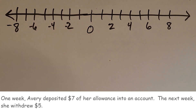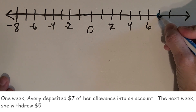Now we're going to move over to a whiteboard number line and do some real-life examples of positive and negative integers. Let's dig into the first problem. It says one week Avery put $7 of her allowance in an account. The next week she withdrew $5. So let's start with the number line — she put $7 in her account, so we're up here at $7.